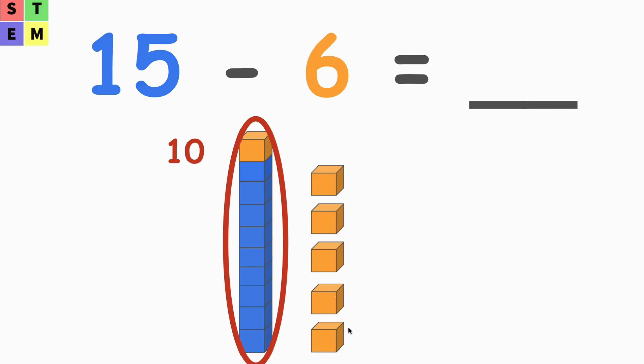And again here we got five blocks: 1, 2, 3, 4, 5. So in total we got 15 blocks again. And here, what we need to do is 15 minus 6. So we got 1, 2, 3, 4, 5, 6—six orange blocks.